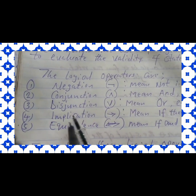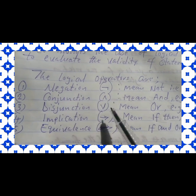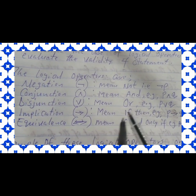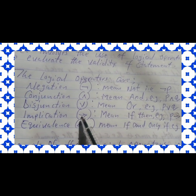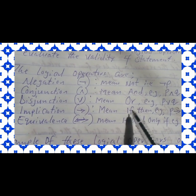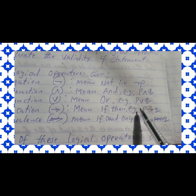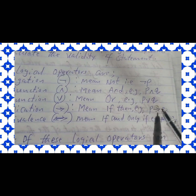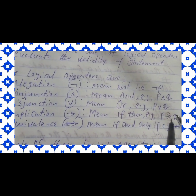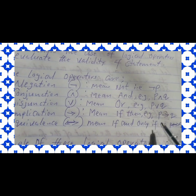Number four, we have the implication. The implication simply means 'if...then.' This symbol means 'if...then.' For example, if you are considering p, then q — p if then q. This symbol simply means 'if...then.'